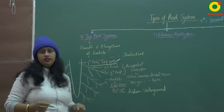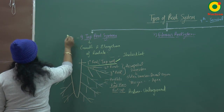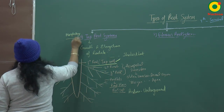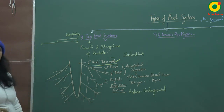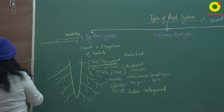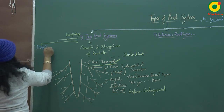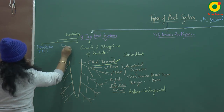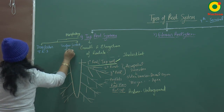On the basis of morphology, tap roots are of two types. First is the deep feeder tap root system, and second is the surface feeder tap root system.